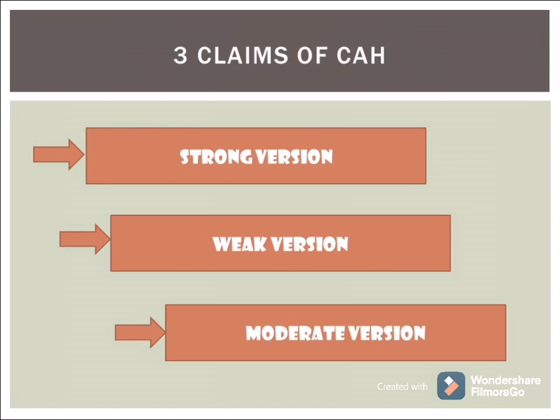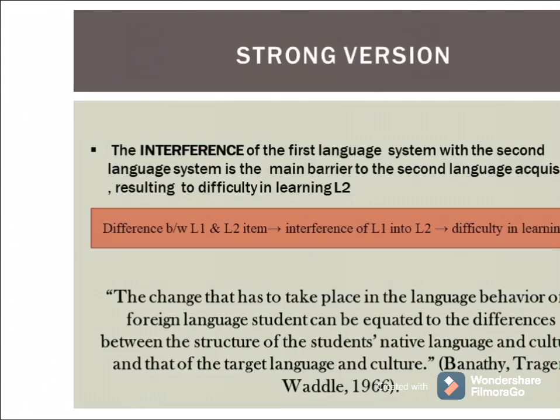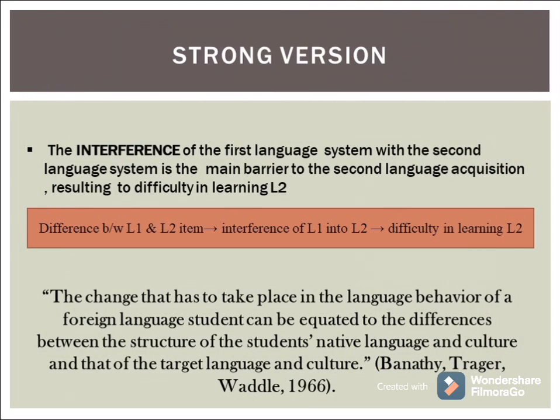There are three claims that govern the Contrastive Analysis Hypothesis — three versions: the strong version, the weak version, and the moderate version. Rooted in behaviorism and structuralist approaches, the interference of the first language system with the second language system is the main barrier to second language acquisition, resulting in difficulty in learning the second language.